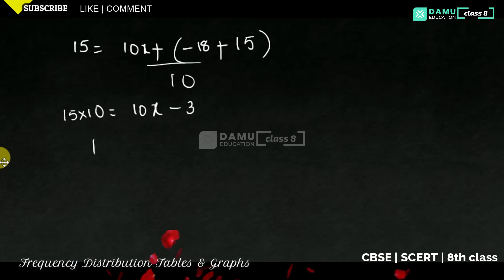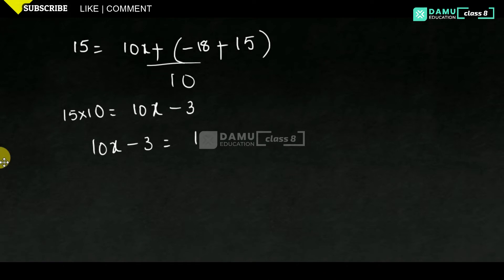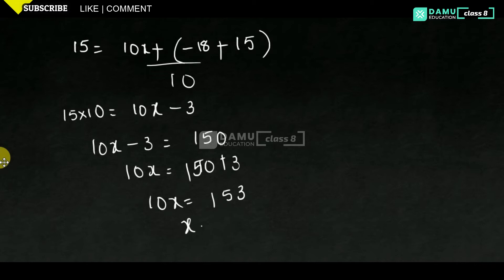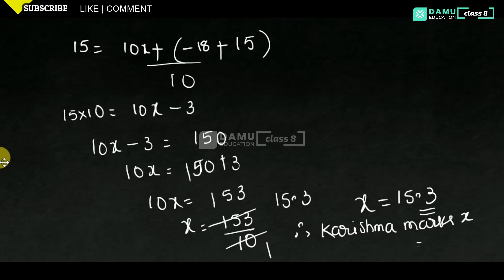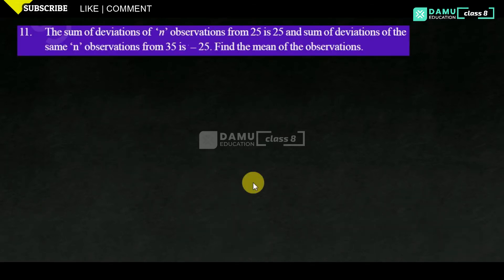Then 10x minus 3 equals 150, so 10x equals 153. Therefore x equals 153 divided by 10, which is 15.3. Therefore Karishma's marks, x, will be equal to 15.3.